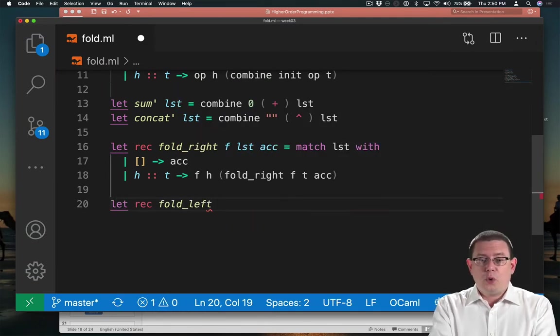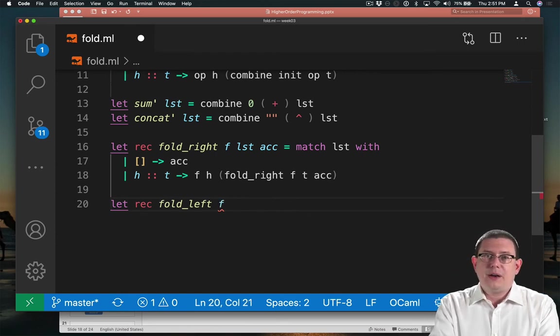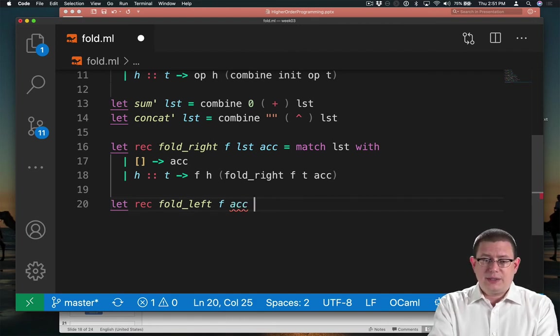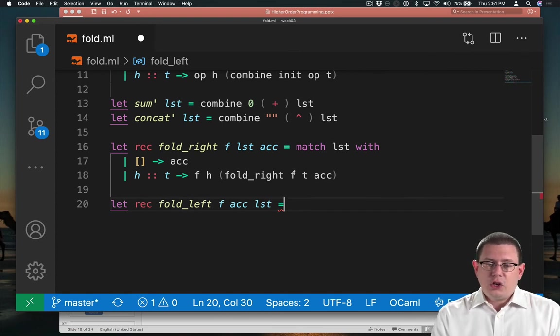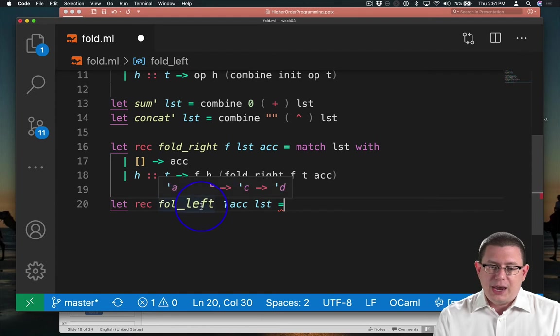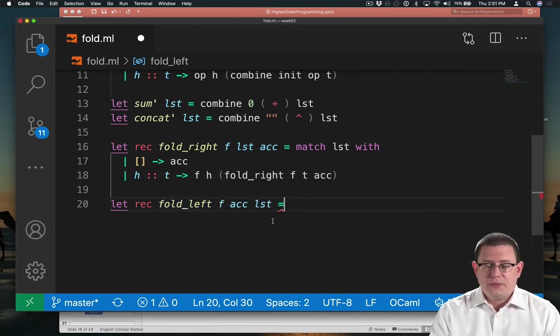If we're going to fold left with a function f, it turns out the standard library takes in the arguments in the other order. It takes in the accumulator first and then the list. There is a mnemonic to remember this, although I tend to forget the mnemonic myself too. It's that the accumulator goes on the side of the list argument, which is named here in the fold function. So for fold right, the accumulator is to the right of the list. For fold left, the accumulator is to the left of the list. Maybe that will help.